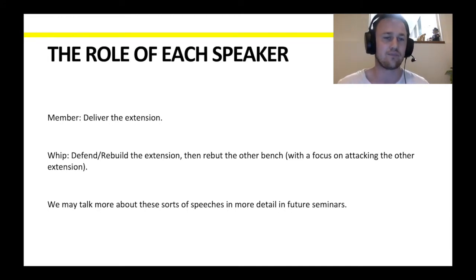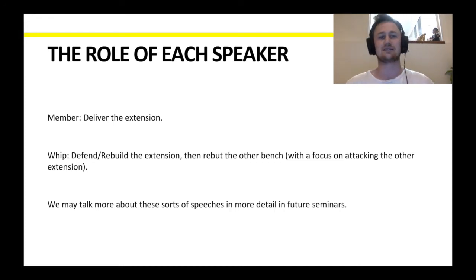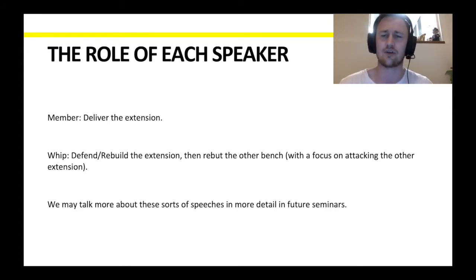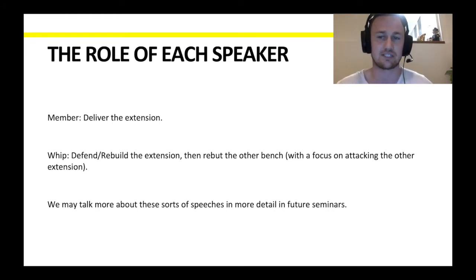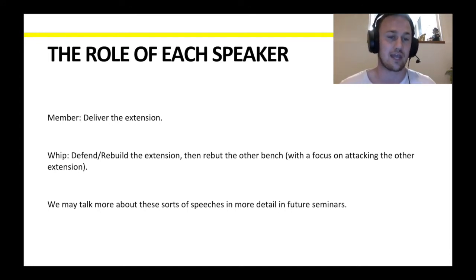And then the whip wants to rebut the other bench. Crucially, two things to note. First, the whip can't add extension material — so you really need to make sure your member is delivering that extension as succinctly and well as possible, because whilst the whip can elaborate, it can't bring new material in. The other thing is that whips when doing rebuttal will often prioritize attacking the other team's extension, because there's no one else in the debate who will really attack it, and if you don't, it's going to stand a lot more powerfully at the end of the debate.